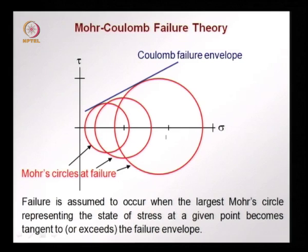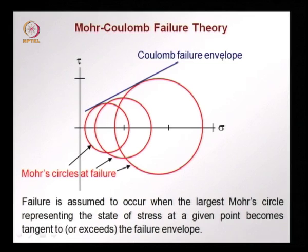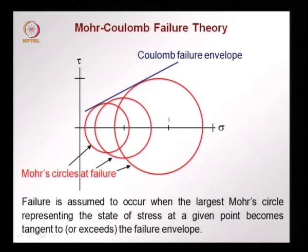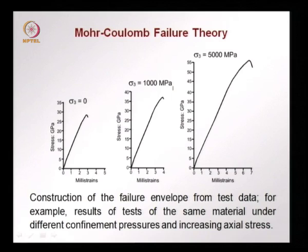Failure is now taken to occur when we look at the Mohr circle at failure for a certain stress state. When we draw all the different Mohr circles at failure for a material and take the envelope, this is called the Coulomb failure envelope. We assume that failure will occur when any Mohr circle touches this failure envelope. When the circle is smaller, failure has not occurred. As the stress increases, the Mohr circle becomes larger and larger, and finally it will touch the Coulomb failure envelope, at which point failure is set to occur. We can determine this failure envelope through testing.